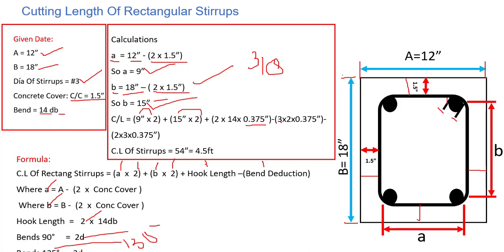Minus we need to do the bend deduction. We have 3 bends for 90 degrees. For 90 degrees it's 2d, so 3 times 2d. And we have 2 bends for 135 degrees, which is 3db, so 2 times 3db. This is what we have put over here.